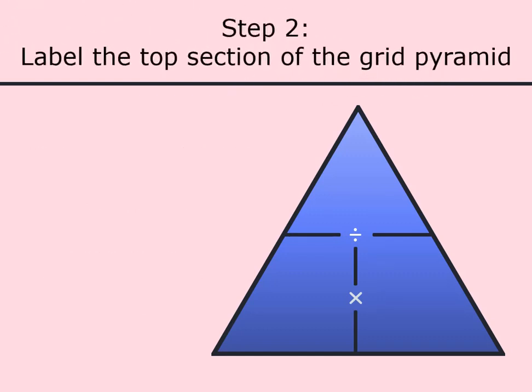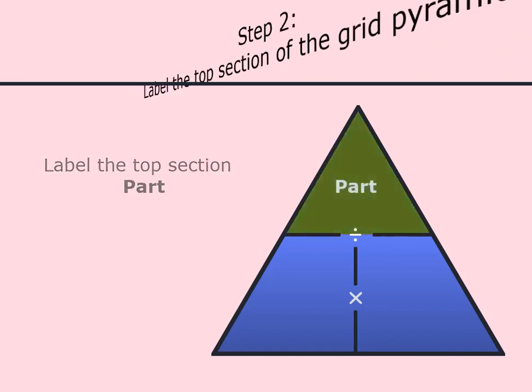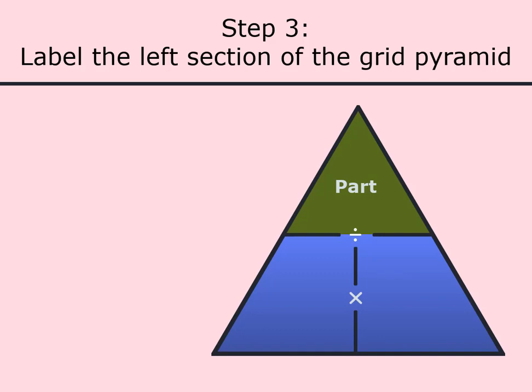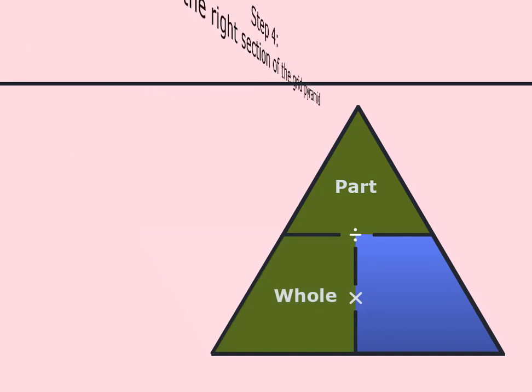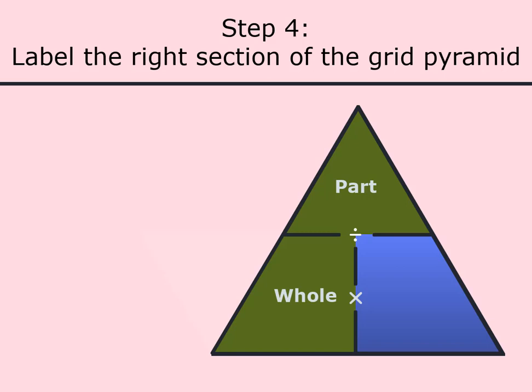Step 2: Label the top section of the grid pyramid. Label the top section part. Step 3: Label the left section of the grid pyramid. Label the left section whole. Step 4: Label the right section of the grid pyramid. Label the right section percent.